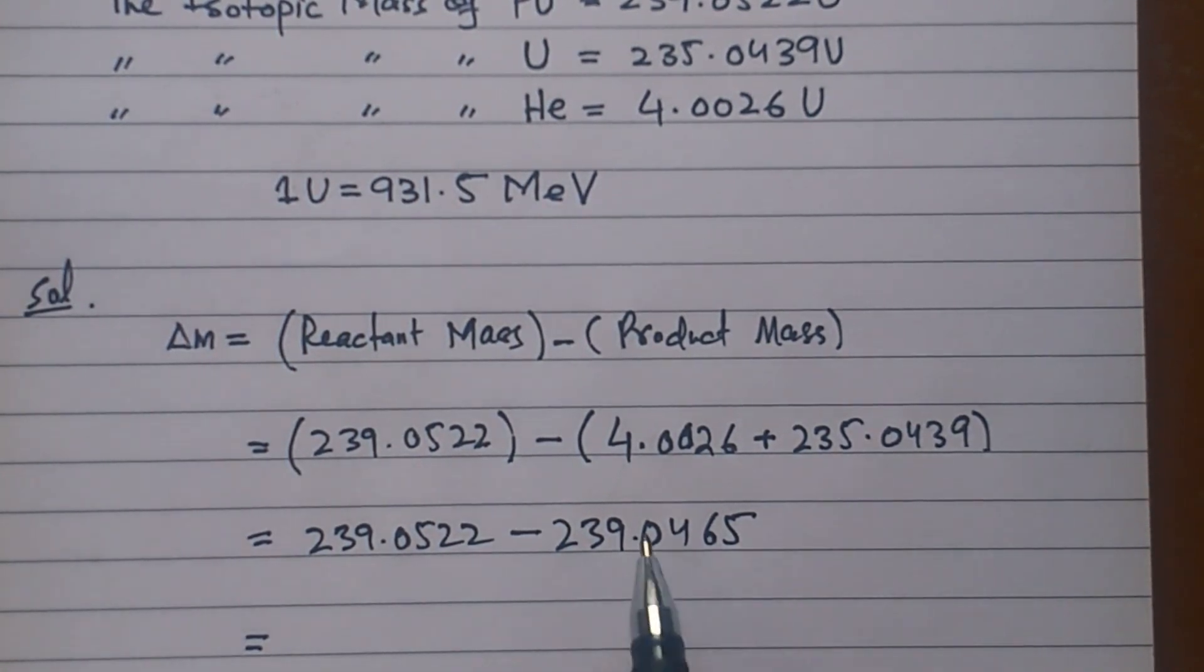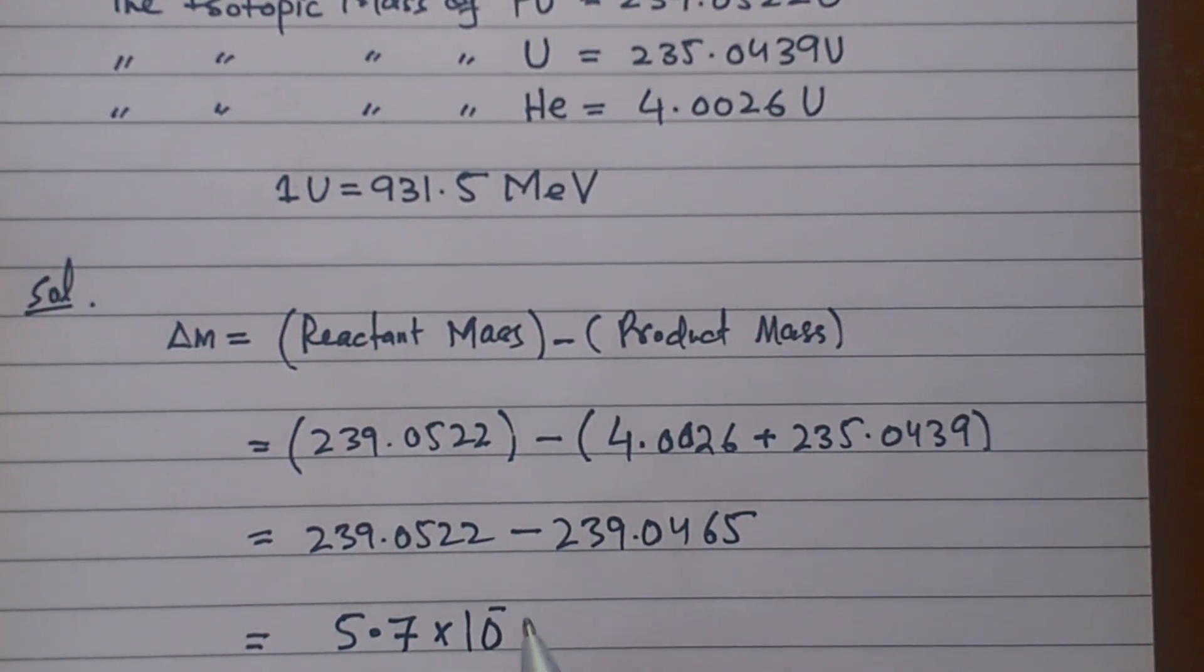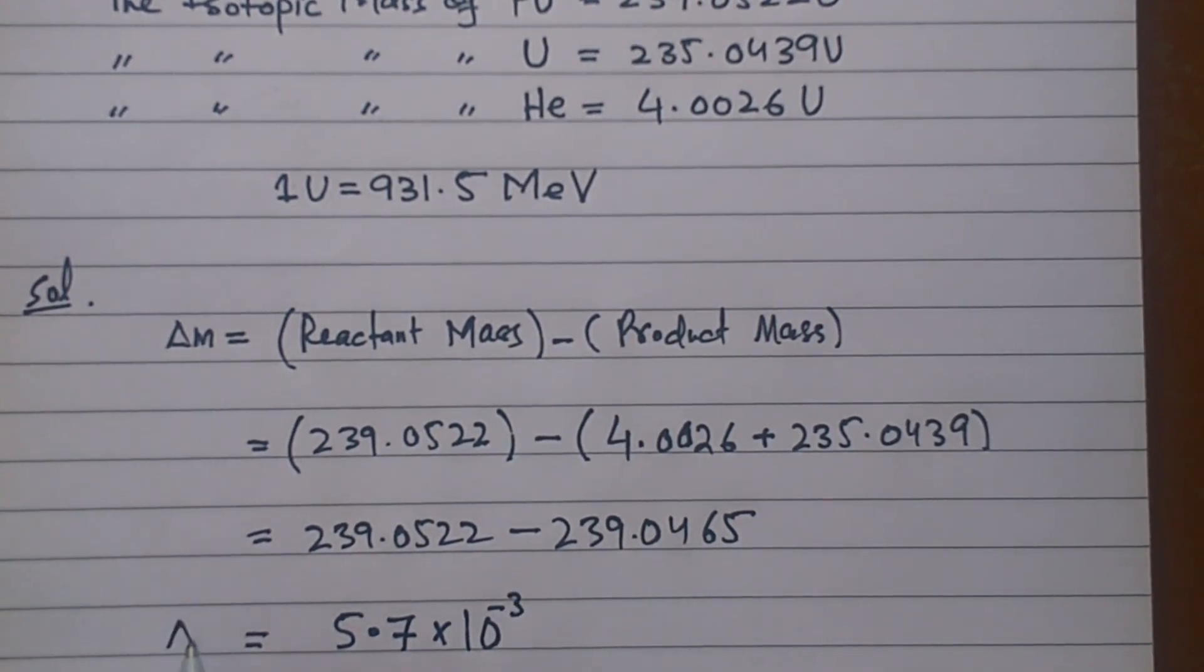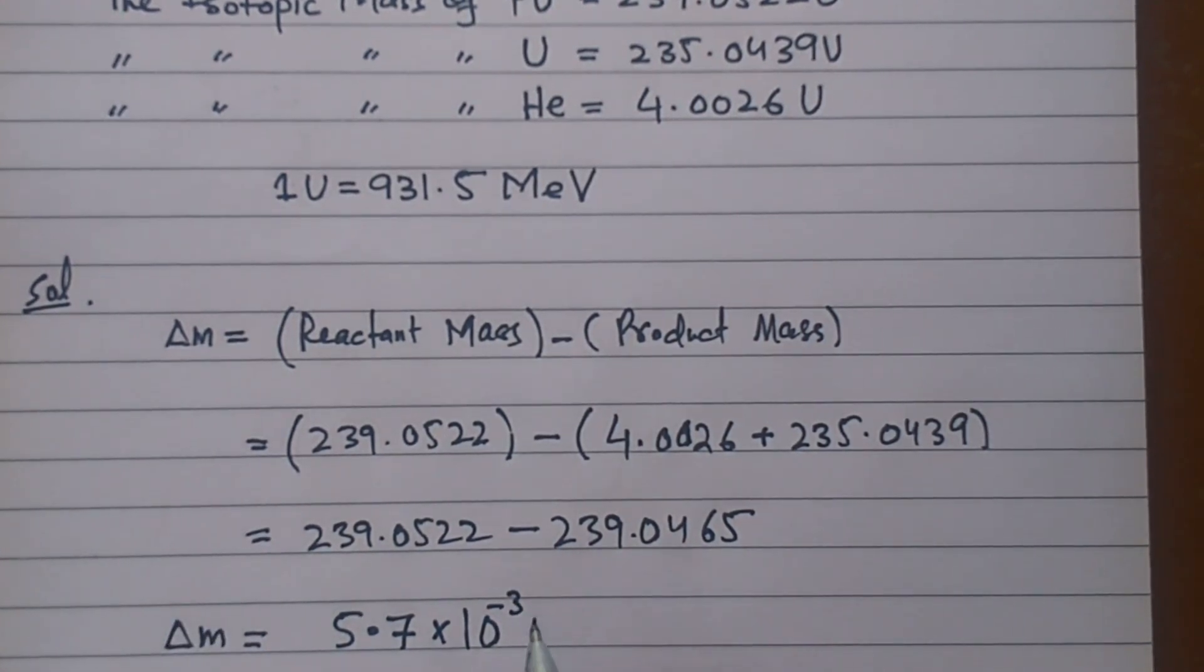And if I subtract, 239.0522 minus 239.0465, I get 5.7 exponent minus 3. This is the mass defect.